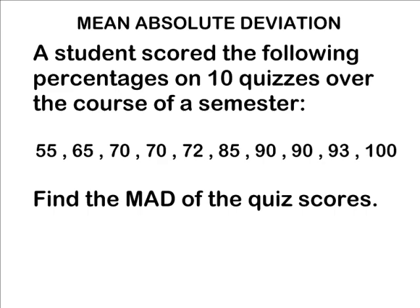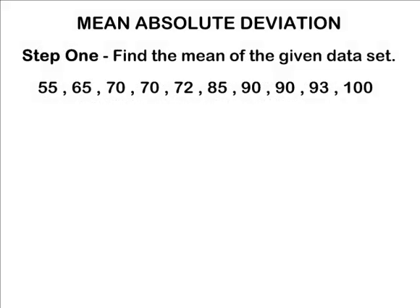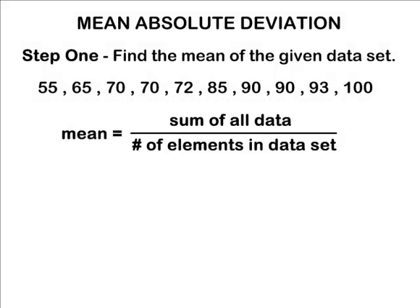Step 1 will always be to find the mean of the given data set. To find the mean of any data set, you have to add up all of your elements together and divide it by the number of elements that you added together. The sum of our 10 elements is 790 and we divide that by 10 to figure out what the mean score is. We would say the mean score that this student had on their quizzes was 79.